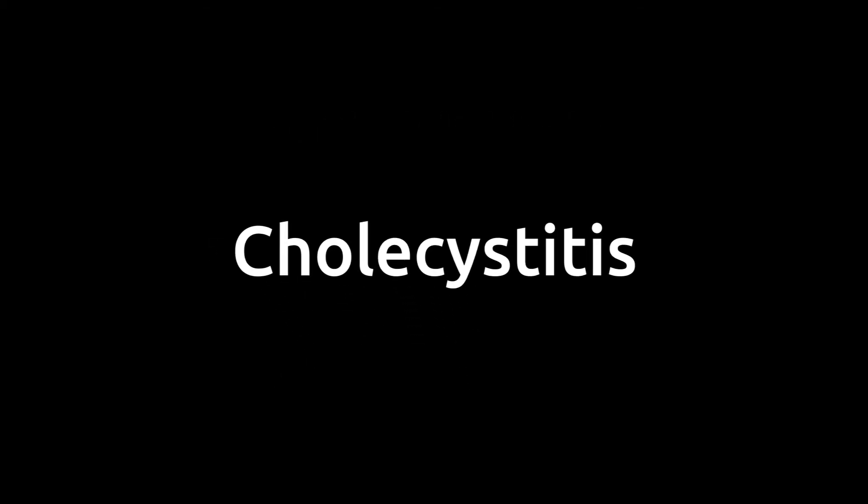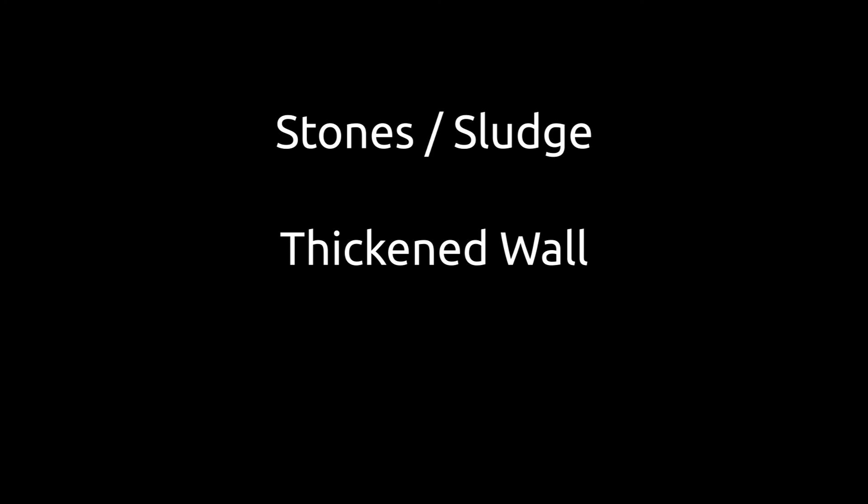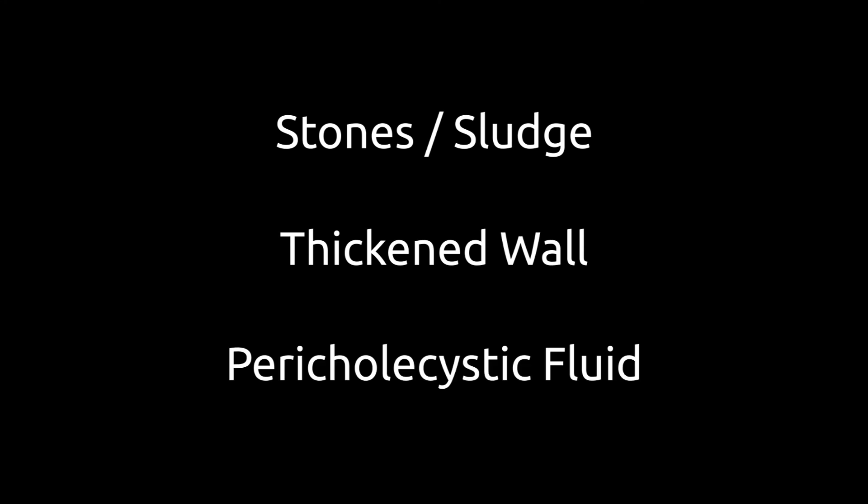This video will review the findings typically associated with cholecystitis. As a brief overview, those findings include gallstones or gallbladder sludge, a thickened gallbladder wall, and the presence of pericholecystic fluid. Visualization of the gallbladder without identification of stones has a high negative predictive value for the diagnosis of cholecystitis, while the combination of these three findings has a positive predictive value of about 90%. Keep in mind that gallstones are neither necessary nor sufficient to make a diagnosis of cholecystitis, and up to about 10% of cases of cholecystitis will be classified as acalculous.